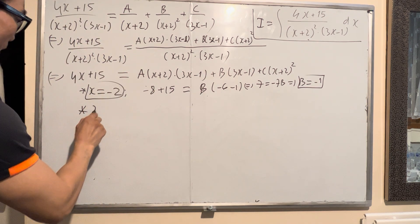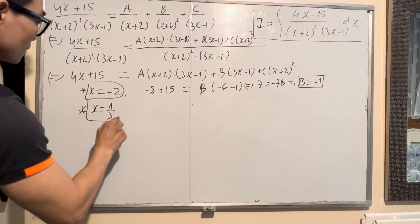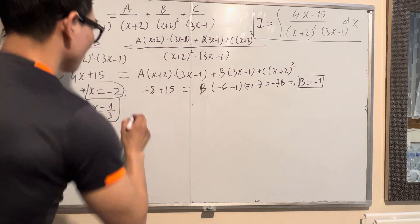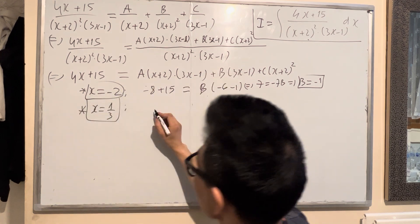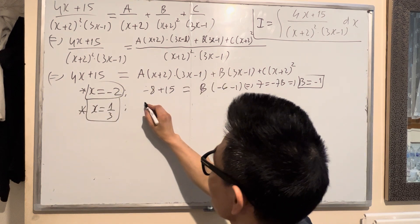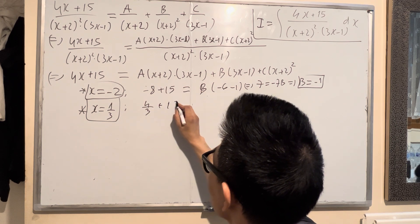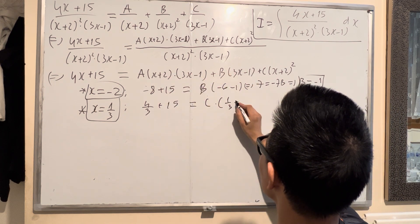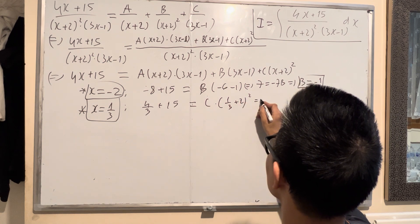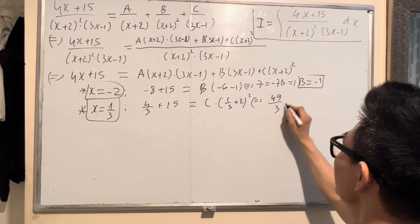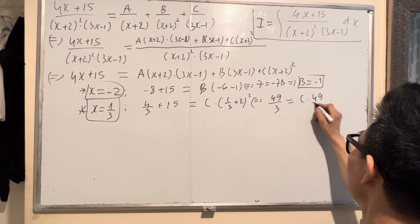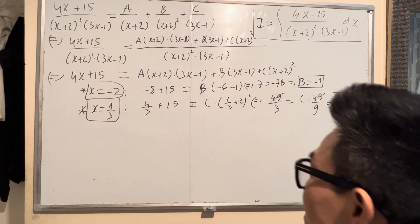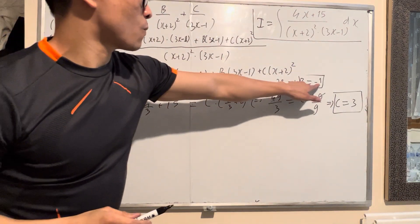How you find C: substitute x equals 1 over 3. Because you can cancel out A and B and find C. When x equals 1 over 3, left hand side is 4 over 3 plus 15. Right hand side: C times 1 over 3 plus 2 squared. So 49 over 3 equals C times 49 over 9. Cancel 49, so C equals 3.